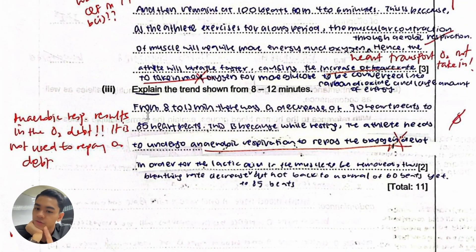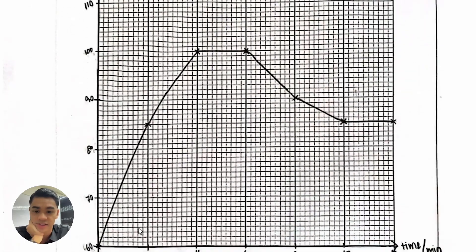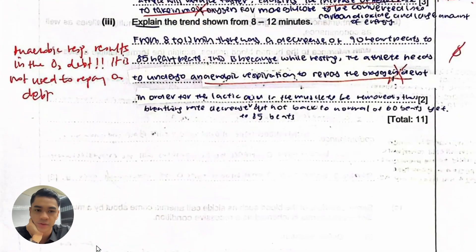I would give two points. The first point is why is it even decreasing? Because he's no longer exercising, he's at rest, so the demand for muscles is now back to normal. That's why the oxygen demand has dropped and there's no need to pump the blood so fast anymore. The second mark will be about why is it not all the way back down to resting levels. I believe his resting levels should be at 60 beats per minute.